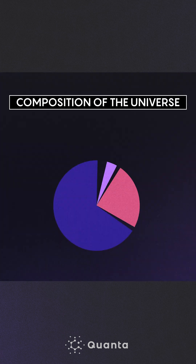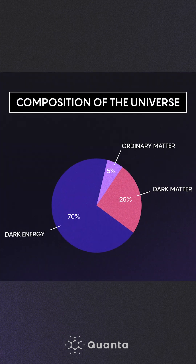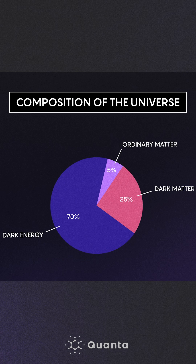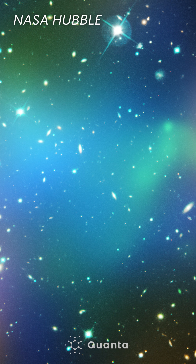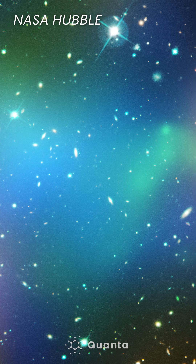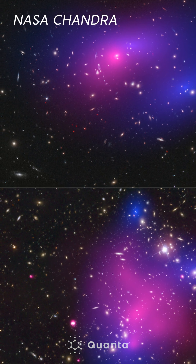It turns out that about a quarter of the entire energy density of the universe is contained in dark matter. The majority of scientists think we do need dark matter to explain the universe, and there are many observations and pieces of evidence for why dark matter exists.